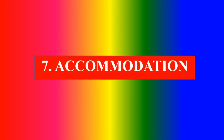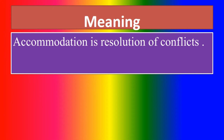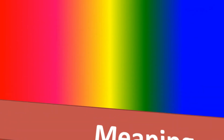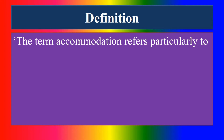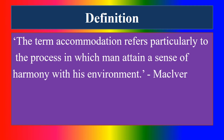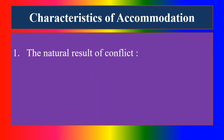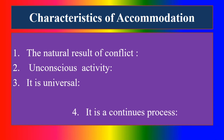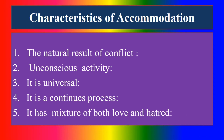Next section: Accommodation — in detail. Accommodation is the resolution of conflict. Can you define accommodation? The term accommodation refers particularly to the process in which man attains a sense of harmony with his environment. Characteristics: first, it is the natural result of conflict. Second, it is an unconscious activity. Third, it is universal. Fourth, it is a continuous process. Fifth, it has a mixture of both love and hatred.